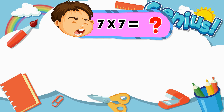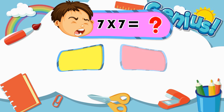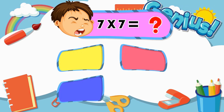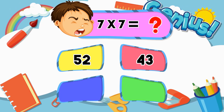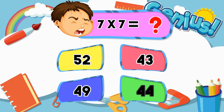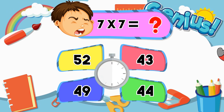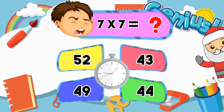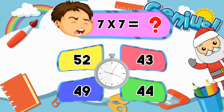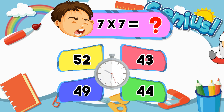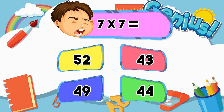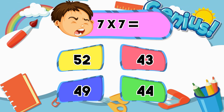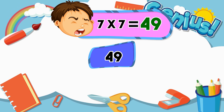What is 7 times 7? 52, 42, 43, 49, 44. 49.